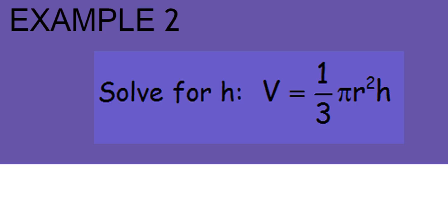Example 2. Solve for h. So we're going to circle the variable h. The first thing we're going to do is get rid of our things that are multiplying. So I know that pi and r squared are multiplying by h.